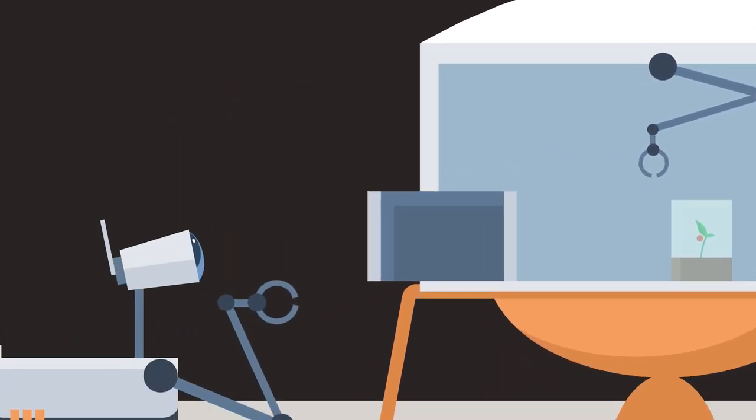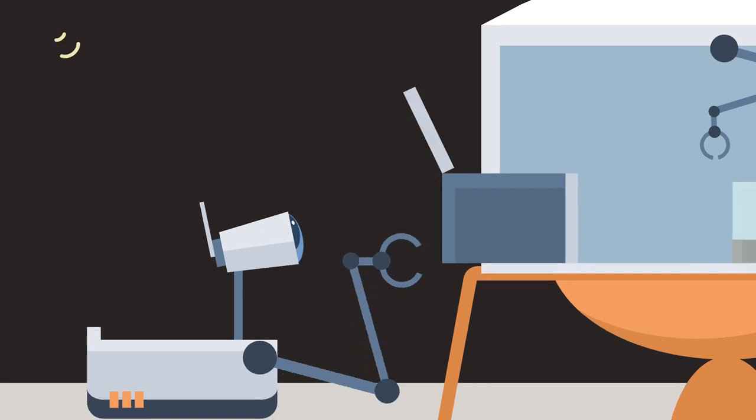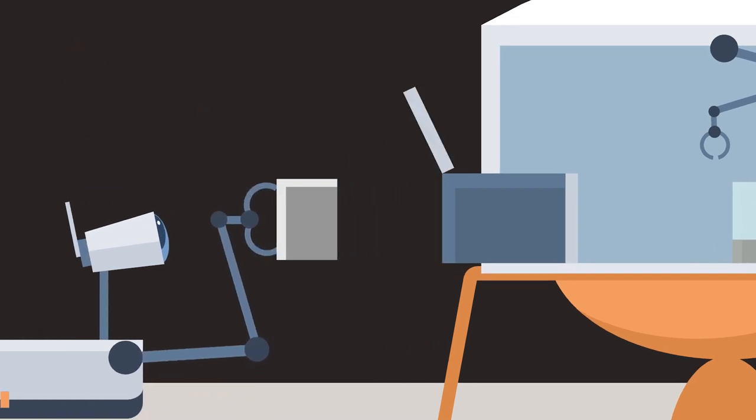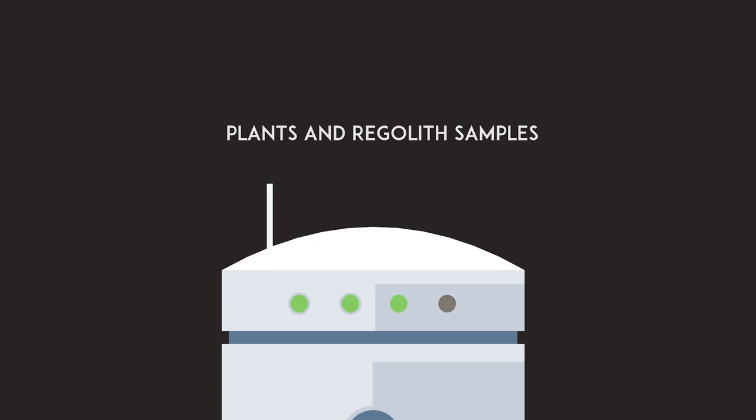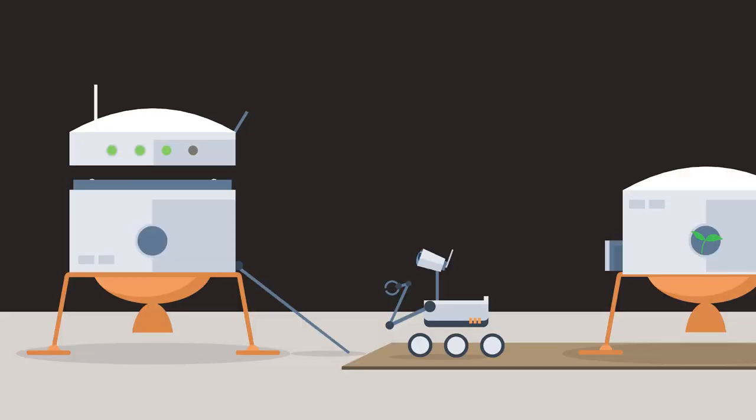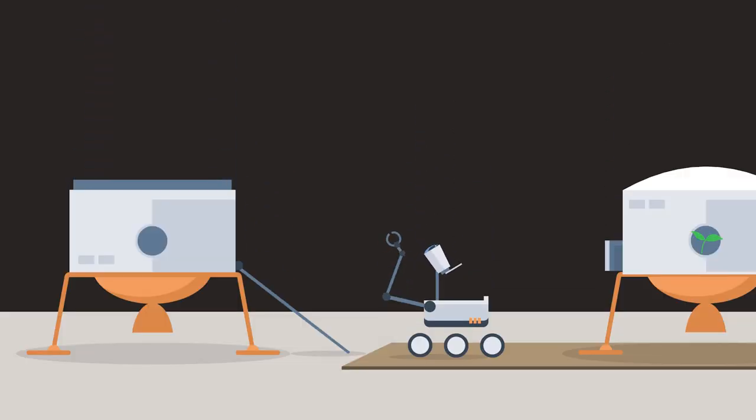Astronauts will tele-operate the Harvest Rover to remove sealed sample containers and place them in the rover storage area. At the end of the growth cycle, all samples will be placed into the ascent module sample return hold and are launched to the EML2 station for analysis.